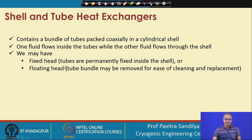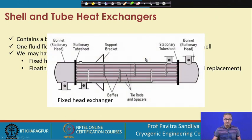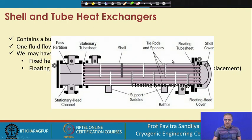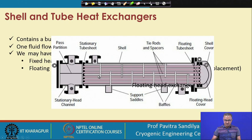Shell and tube heat exchangers may have a fixed head, where tubes are permanently fixed inside the shell, or a floating head, where tube bundles may be removed for ease of cleaning and replacement. In the fixed head configuration, stationary heads are on both sides along with baffles and tie rods. In the floating head configuration, the head can be taken out of the shell for maintenance or replacement and put back after cleaning.